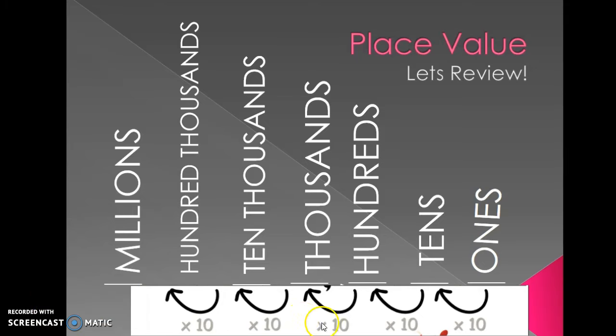As the song wraps up, you should have a place value chart that looks something like this. From the right to the left, it starts with ones, then the tens, then the hundreds, followed by the thousands, ten thousands, hundred thousands, and millions place value.